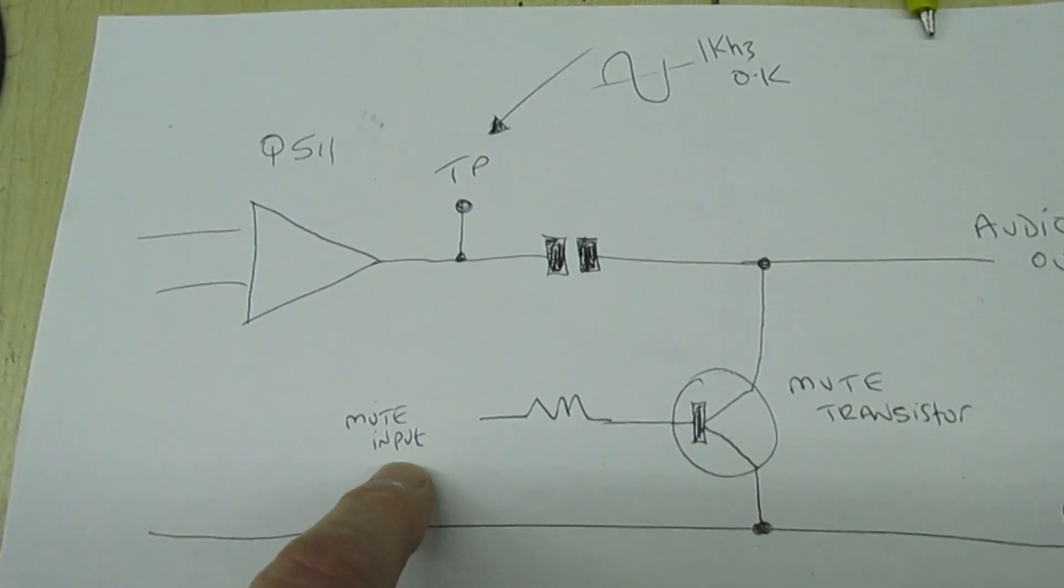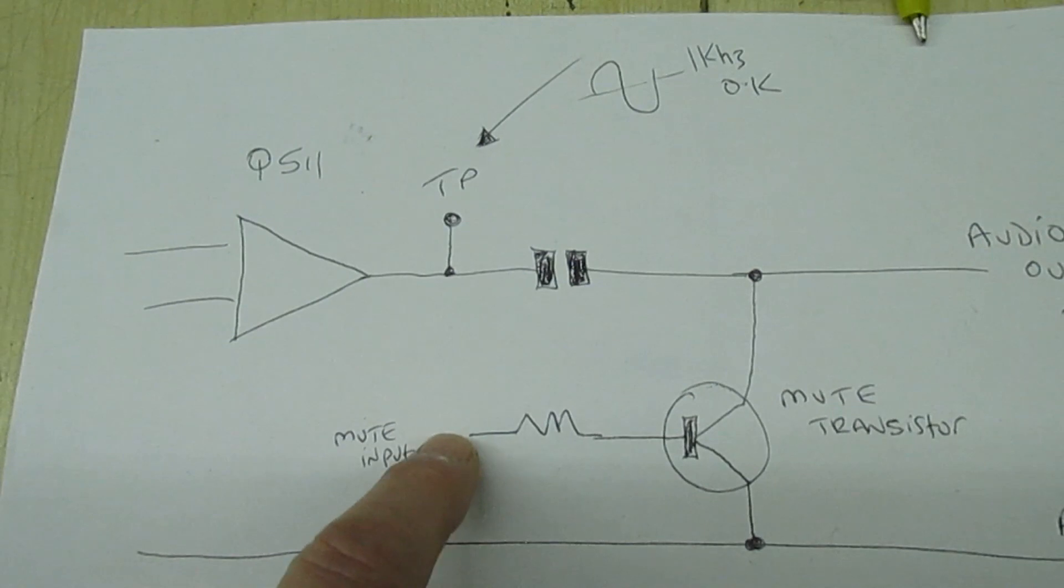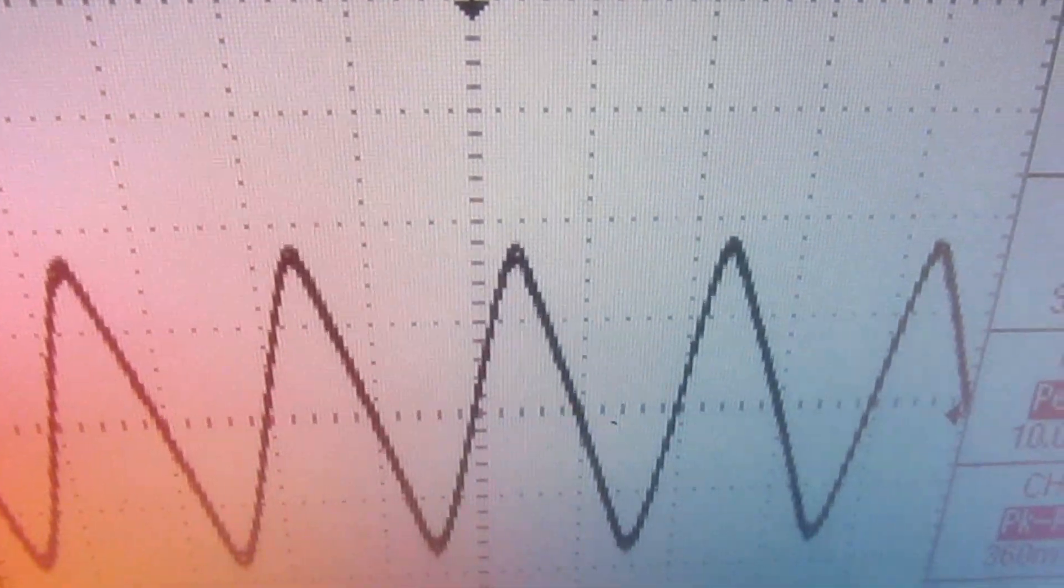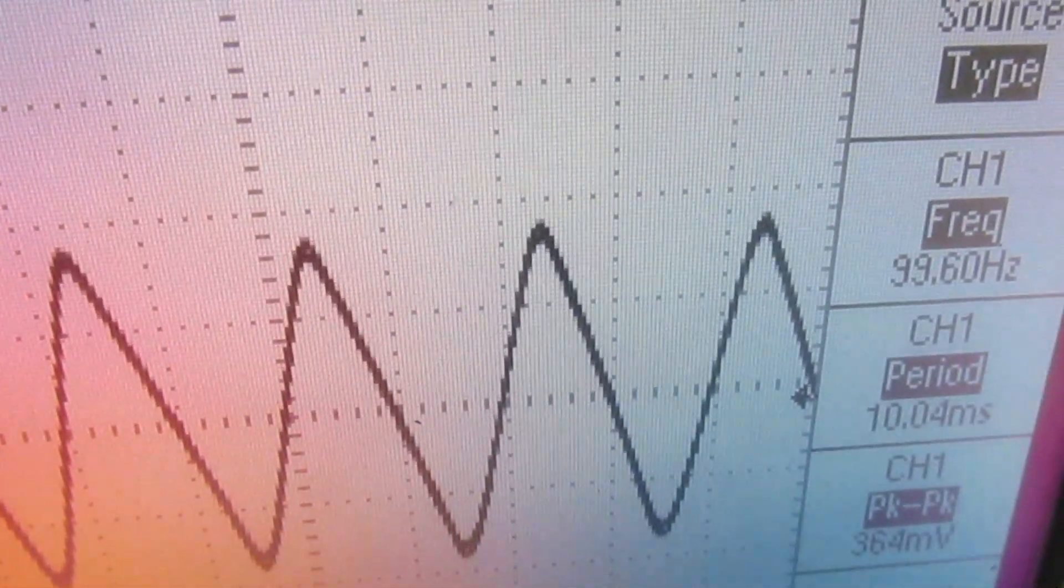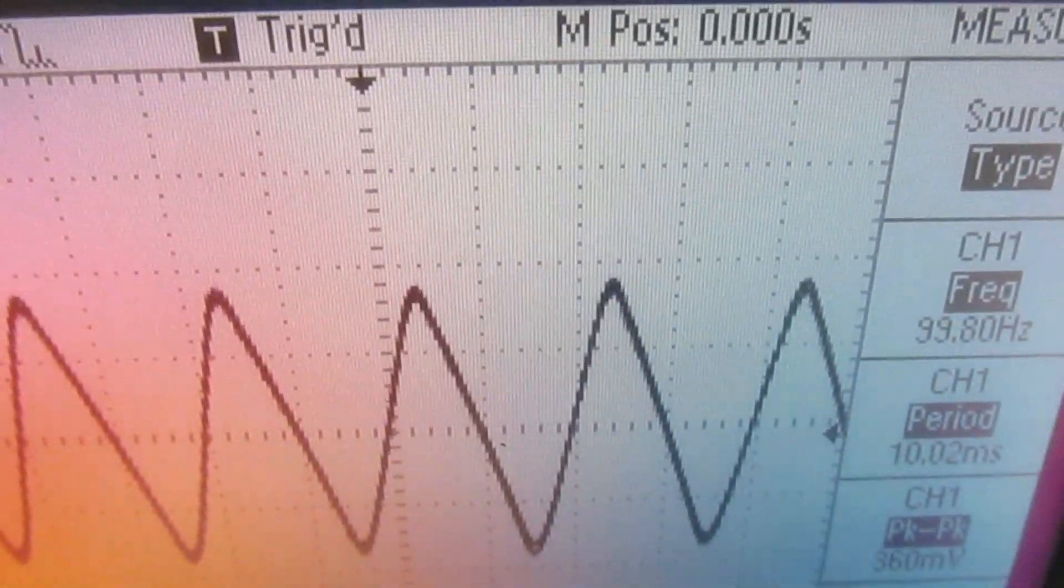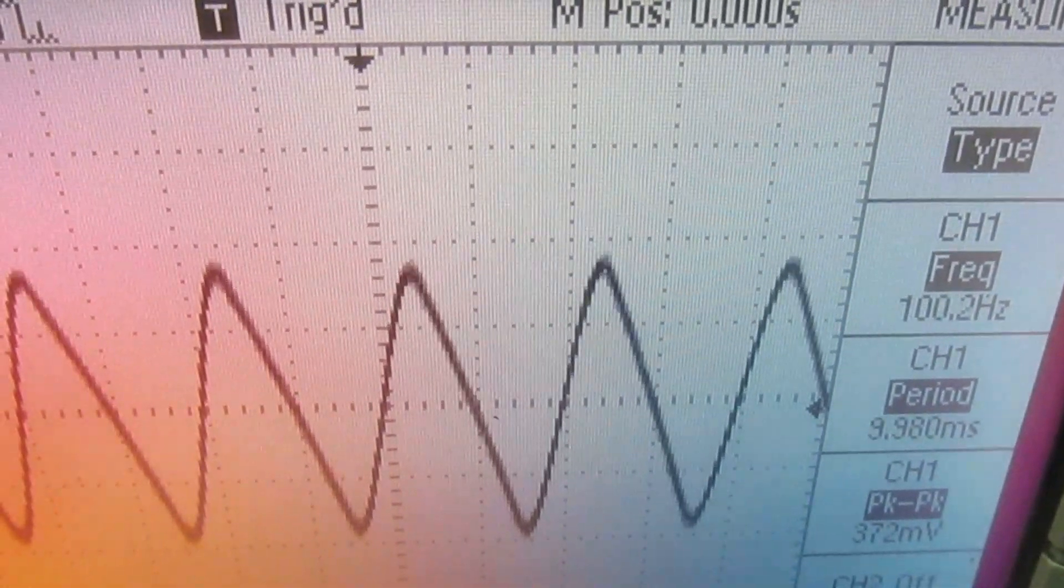Right, so if we actually connect the scope to the mute line, we've actually got a big ripple coming from somewhere. And if you look at the frequency, it's 100 hertz. So there's only one place that can be coming from, and that's the power supply.